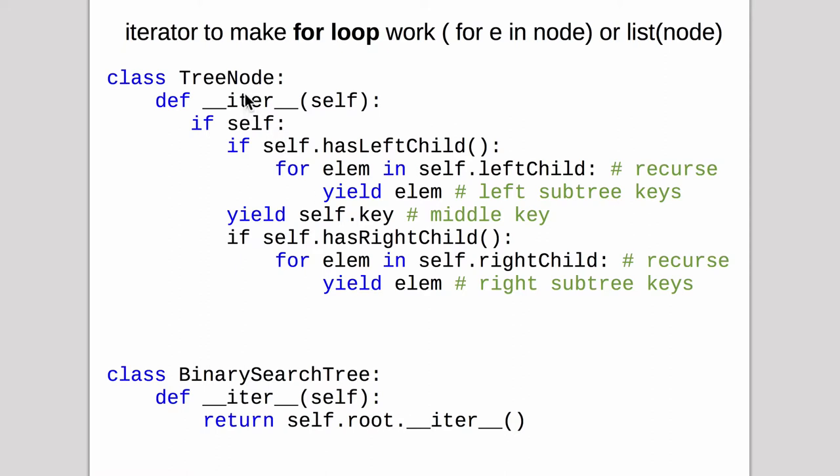So inside the tree node we also have an iterator. So this will iterate over a subtree that you pass as the object. So the way it works is if self has a left child it has a left subtree it's then going to use the for loop to iterate over the whole left subtree.